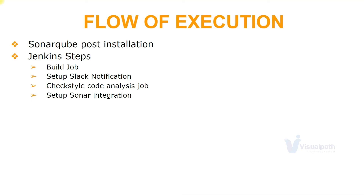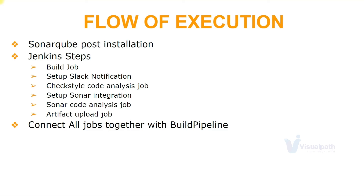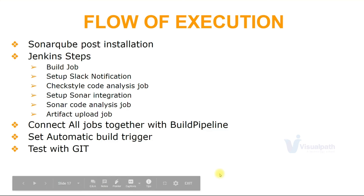We're going to set up SonarQube integration — integrate the SonarQube server with Jenkins and set up a job which will do code analysis using SonarScanner and upload it to the SonarQube server. The next job will be set up to upload our tested artifact to the Nexus repository. Finally, we'll connect all the jobs together with a build pipeline and set up an automatic build trigger so that whenever there is a code change, the pipeline gets triggered. Up to this point it's the Continuous Integration pipeline. We'll make a code change with Git, push new code, which will trigger this pipeline.